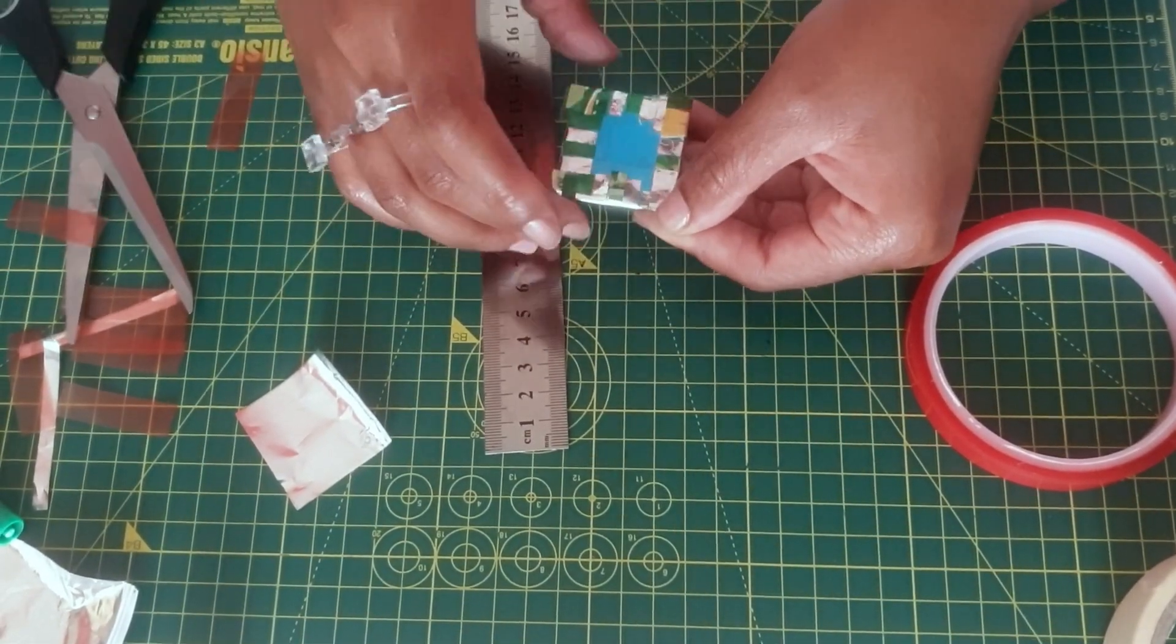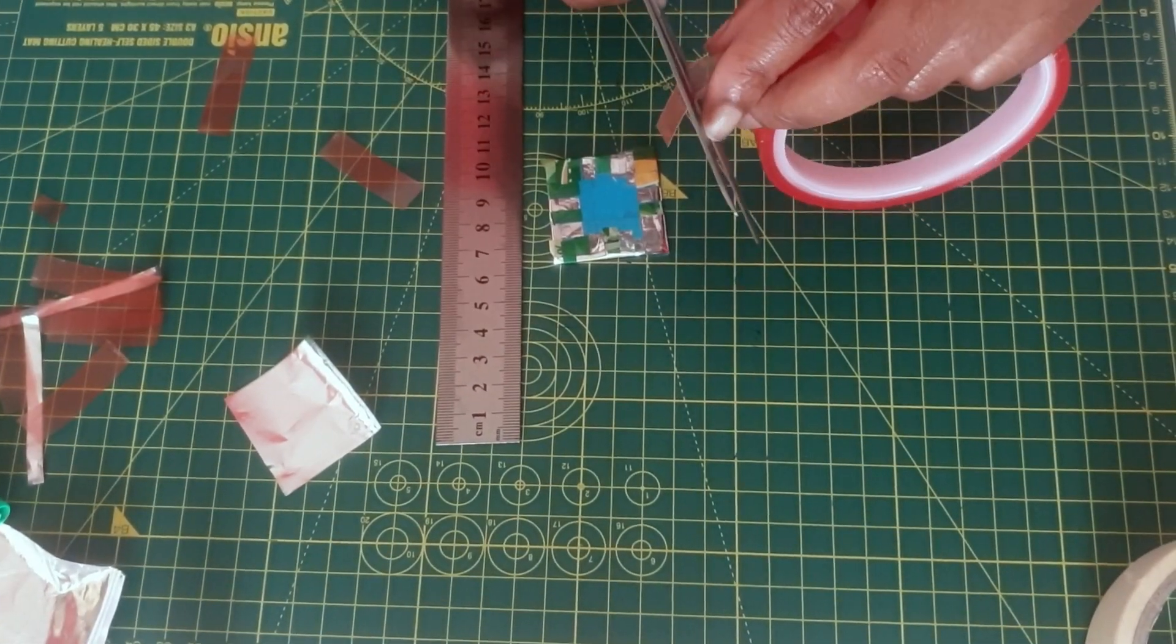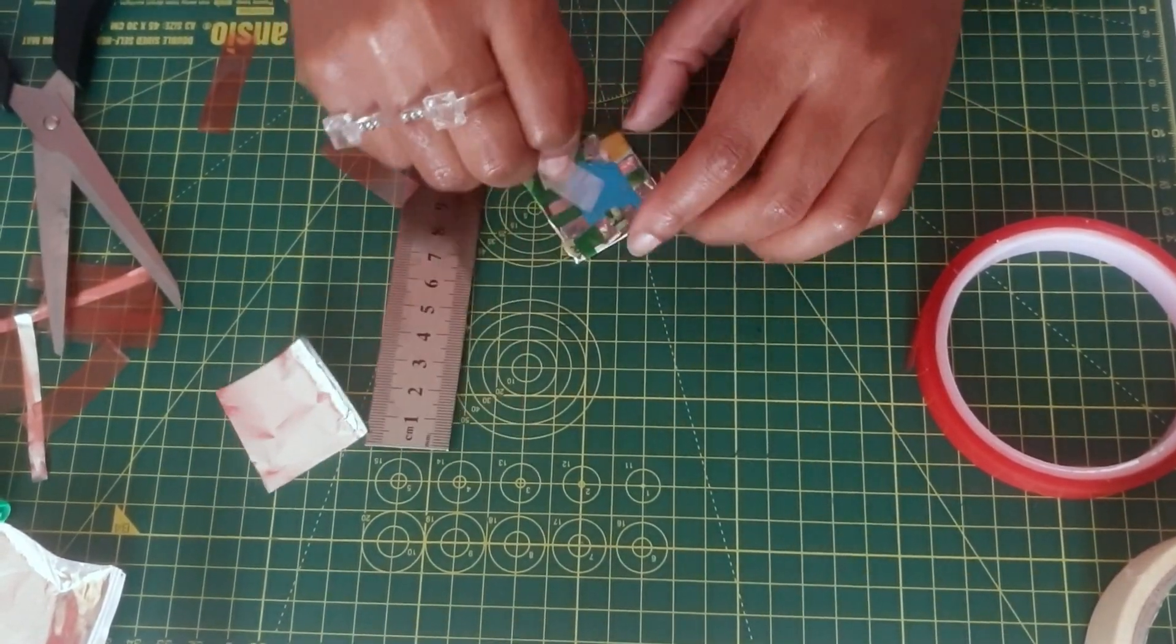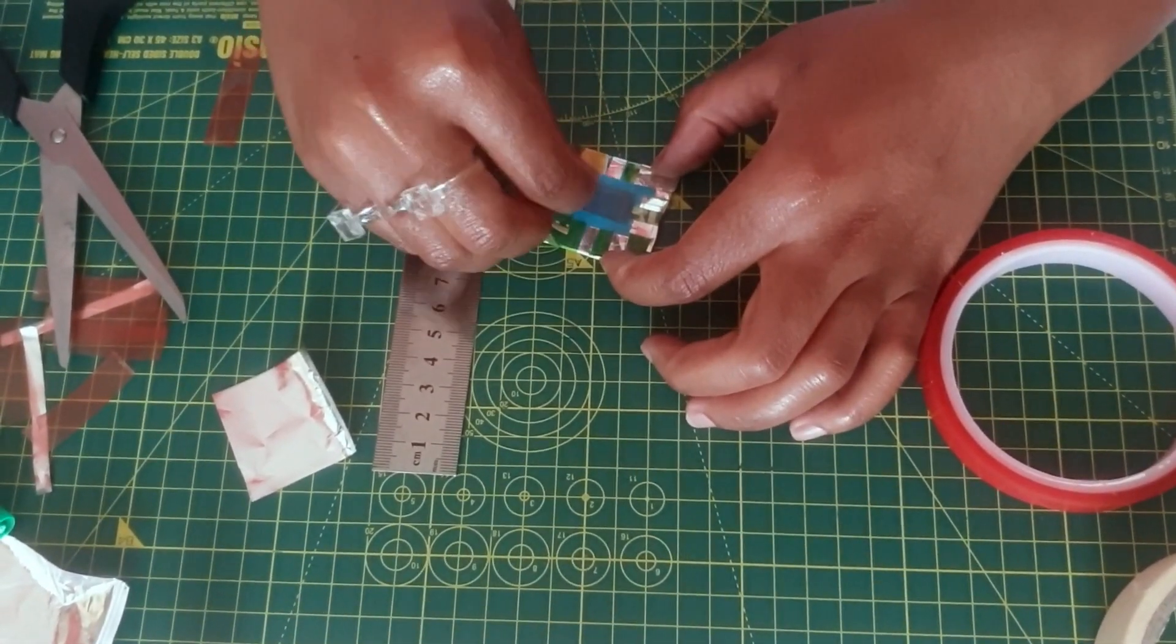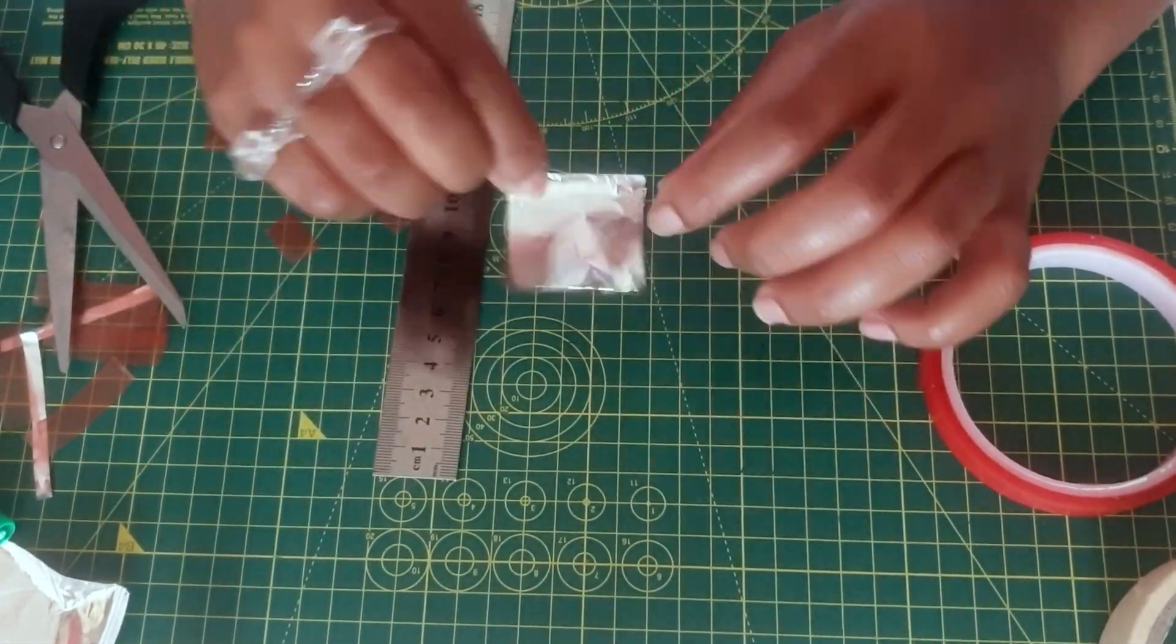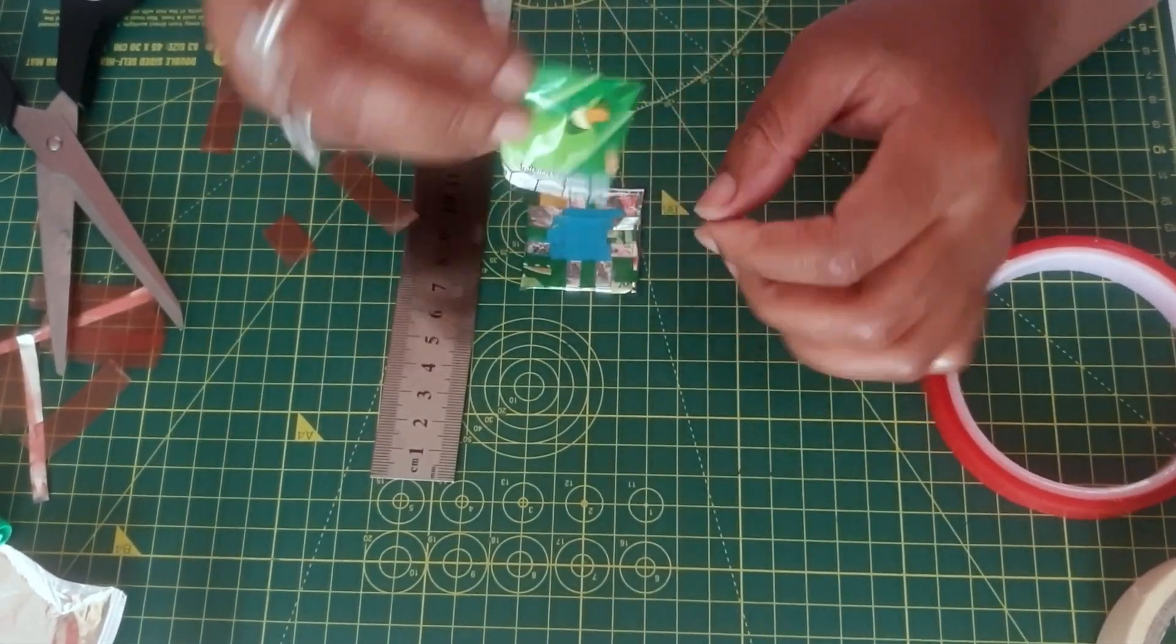Once all those edges are folded in, I do cut an extra square of sticky back plastic just to cover the exposed middle section, and then we can put on our silver backing.